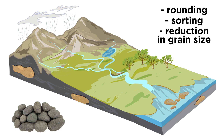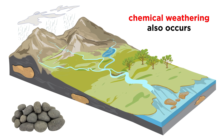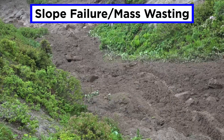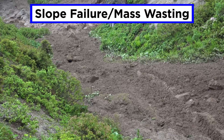With respect to weathering, the most impactful changes made to sediments in fluvial environments are their rounding, sorting, and reduction in grain size. In addition, the chemical weathering processes discussed in the previous tutorial also operate in fluvial environments. Fluvial processes can also be discussed outside the context of a stream.